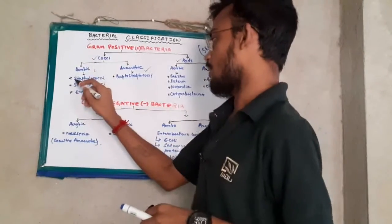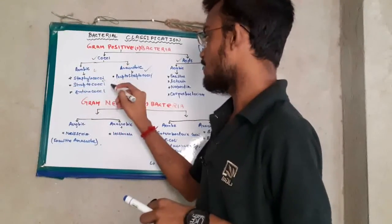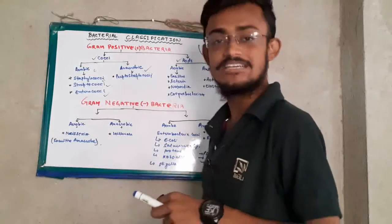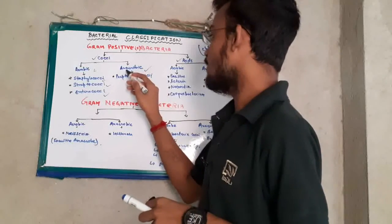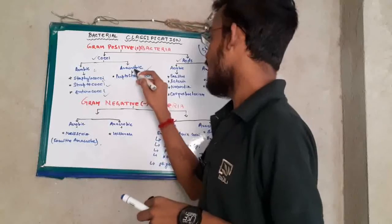In aerobic bacteria, the examples are Staphylococci, Streptococci, Enterococci, etc. In anaerobic, we have Peptostreptococci.